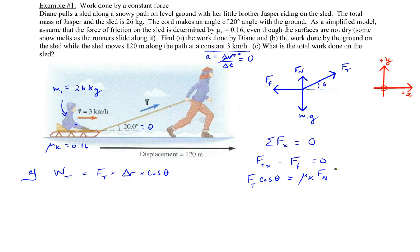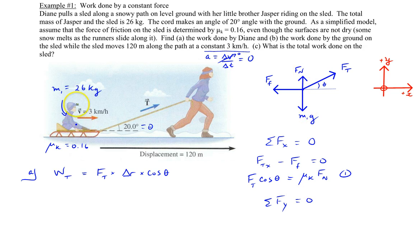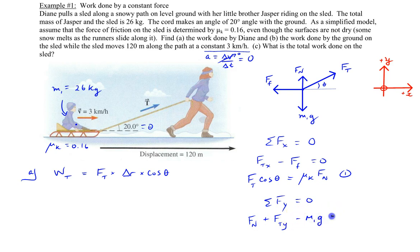Continuing along the y-axis: the sled is not jumping up and down, so forces balance. Don't make the mistake of thinking the normal force simply equals the weight — there is a vertical component of tension pulling upward, which decreases the normal force. Summing forces in the y-direction: the normal force plus the y-component of tension minus the weight m1·g equals zero. Therefore, Fn = m1·g − ft·sin(θ). This is equation two.